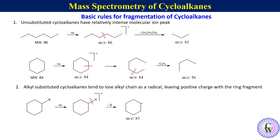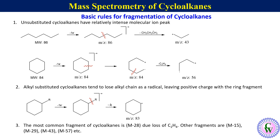The most common fragment of cycloalkanes is m minus 28, due to the loss of an ethylene molecule. Peaks at m minus 15, m minus 29, m minus 43, m minus 57, and others are also observed due to the loss of methyl, ethyl, propyl, and butyl radicals respectively.